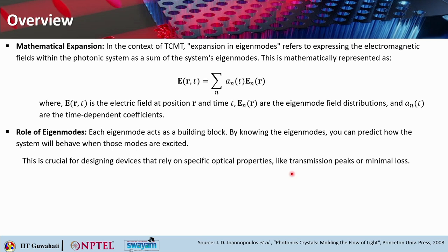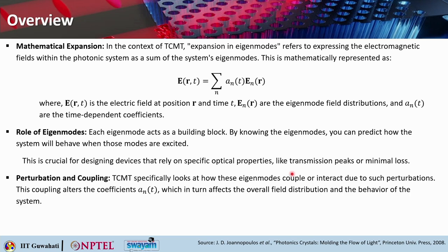The third important point is perturbation and coupling. In real-world applications, the idealized eigenmodes are perturbed due to their interaction with other components or due to features like bands, splits, or material inconsistencies in your design. Temporal coupled mode theory specifically looks at how these eigenmodes couple or interact in the presence of perturbations. The coupling will alter the coefficients A(T), which in turn affects the overall field distribution and hence the behavior of the system.